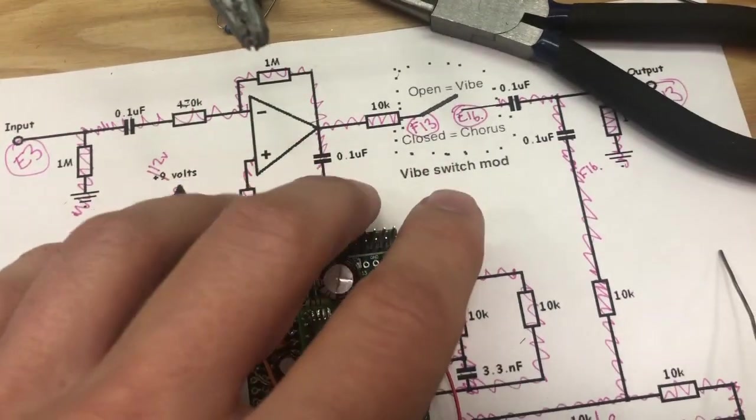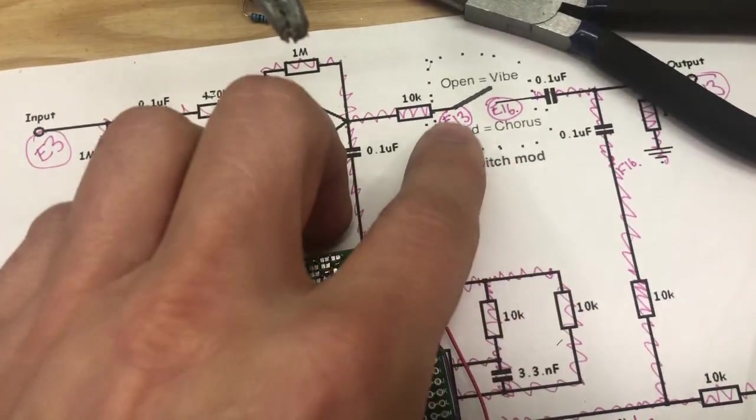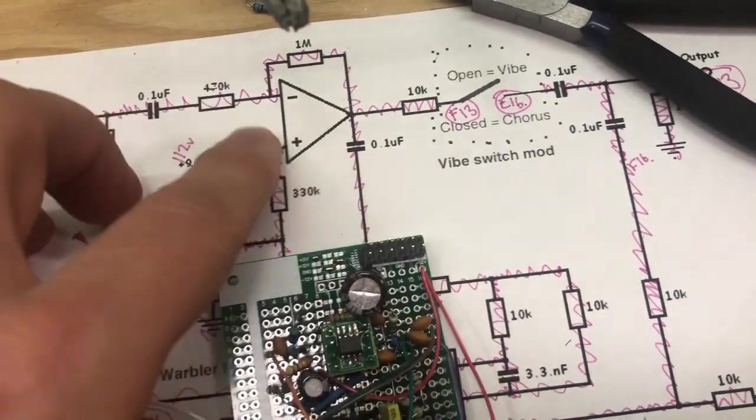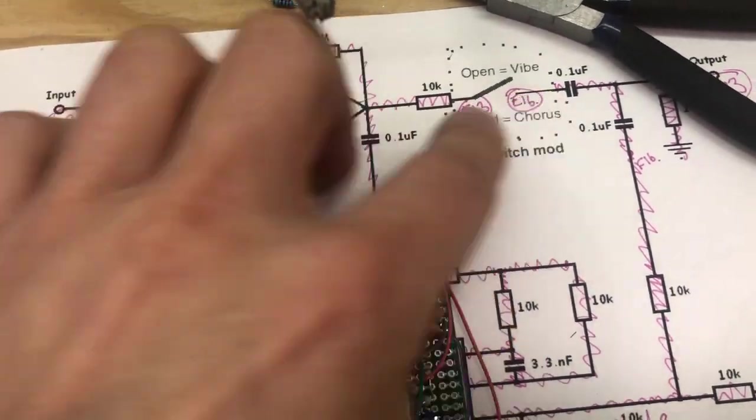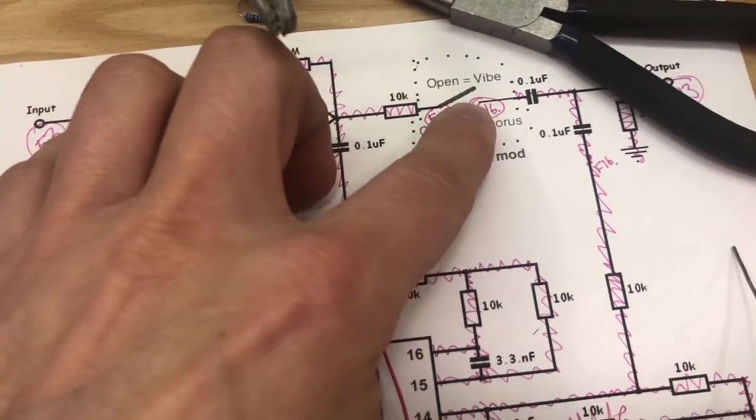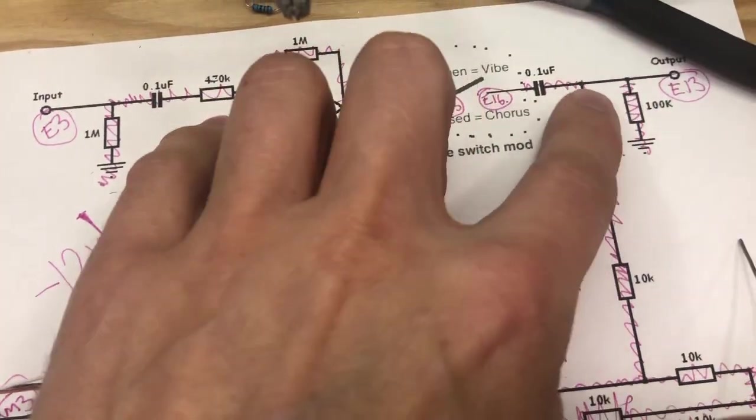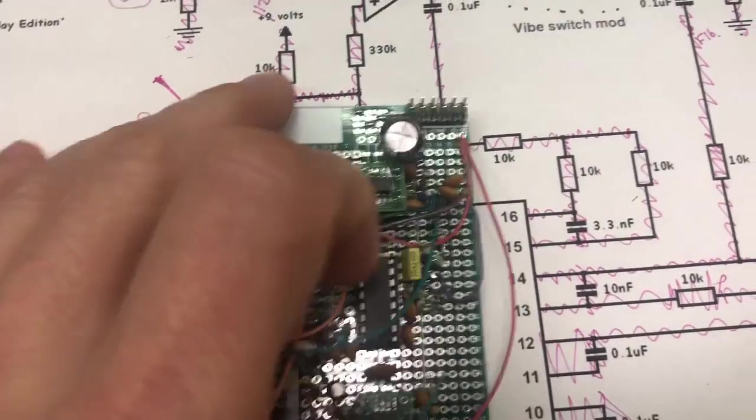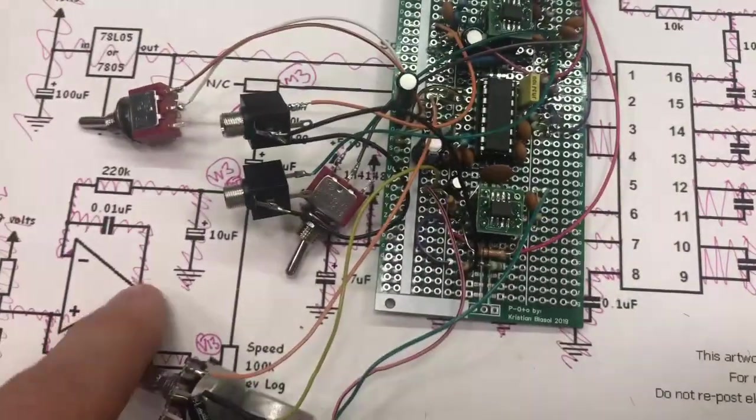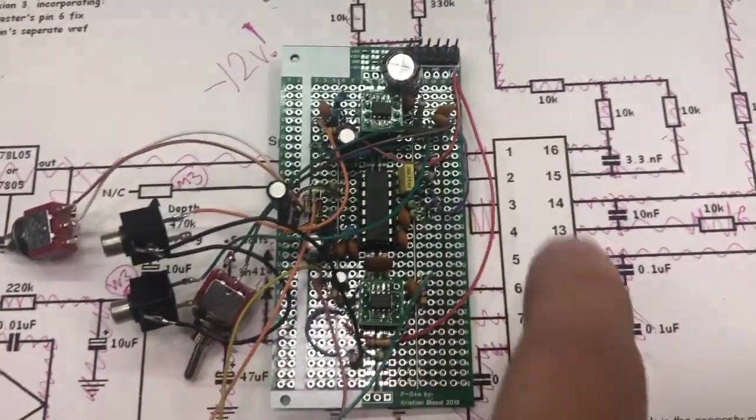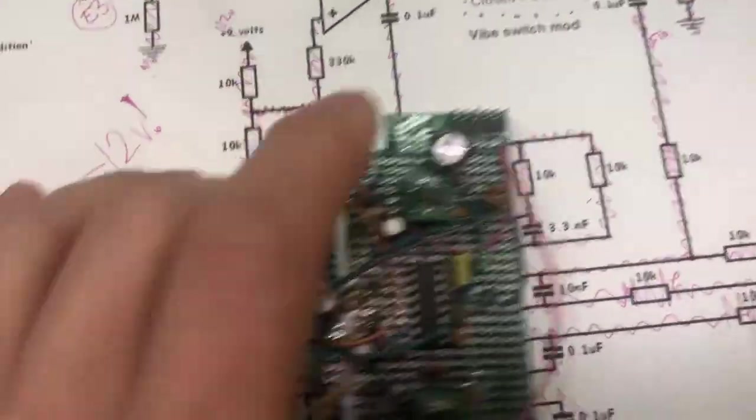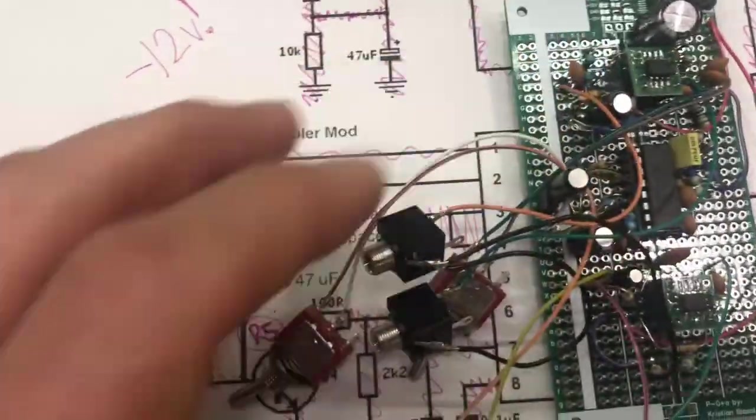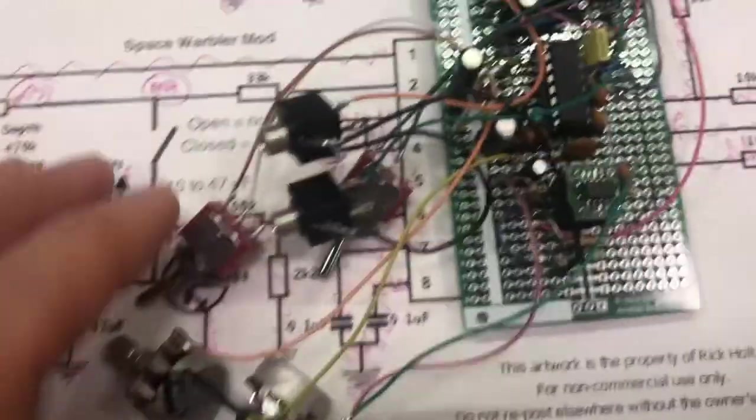Then we have two different modifications. This one takes the straight signal, the untouched signal, and we just break that to the output so we only get the chorus effect, which basically is vibrato or a vibe. You'll hear that in a minute.